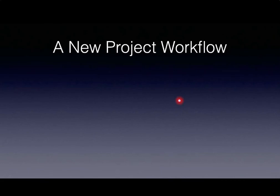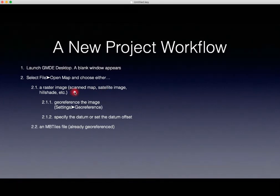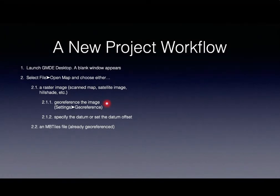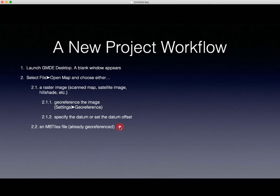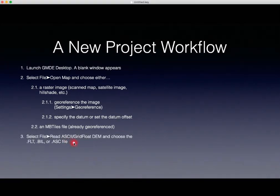Here is a new project workflow. First, launch GMDE desktop and a blank window appears. Second, select File > Open Map and choose either a raster image — a scanned image, satellite image, hill shade, etc. If using a raster image, you'll need to georeference it and specify the datum or set the datum offset. Alternatively, the map file can be an mbtiles file, which is already georeferenced and uses the WGS84 datum.